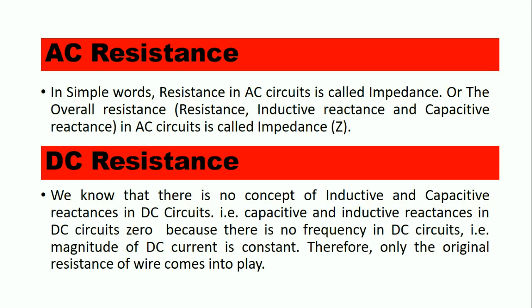In simple words, AC resistance can be called impedance — that is, the resistance in AC circuits is called impedance. We can say that the overall resistance in AC circuits is called impedance, and we simply represent it as Z.